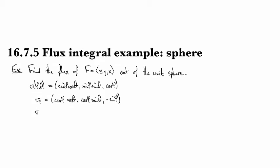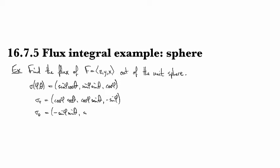And then for the θ derivative, we'll get minus sine φ sine θ, sine φ cosine θ, and then zero, because there's no θ in the third one.